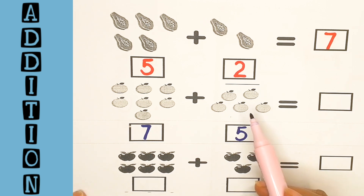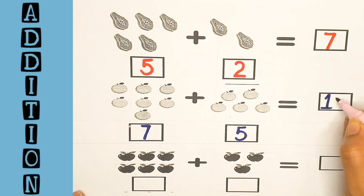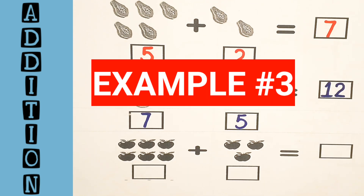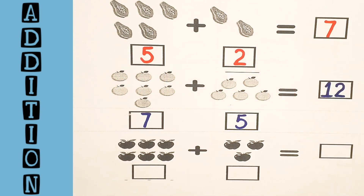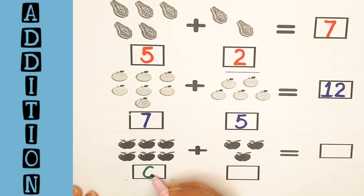Twelve. So the total number of oranges is twelve. Seven and five is twelve. Let's take another example. Here are some apples. Let's count them: one, two, three, four, five, six. Here are six apples.